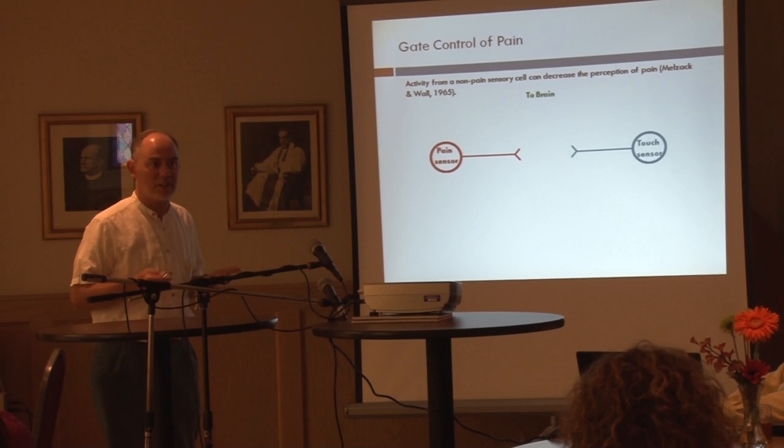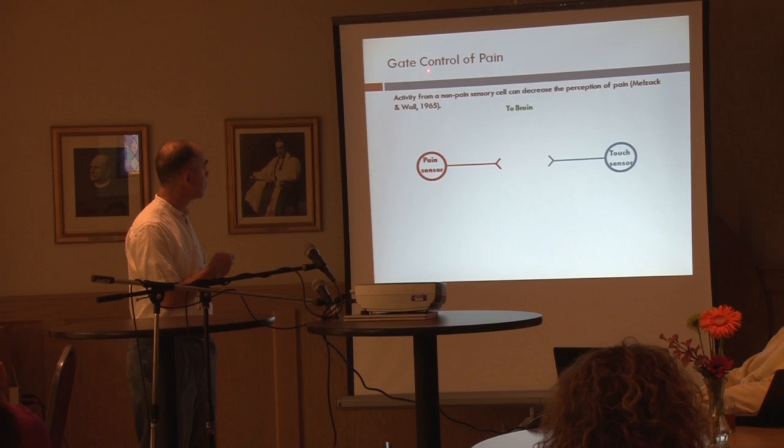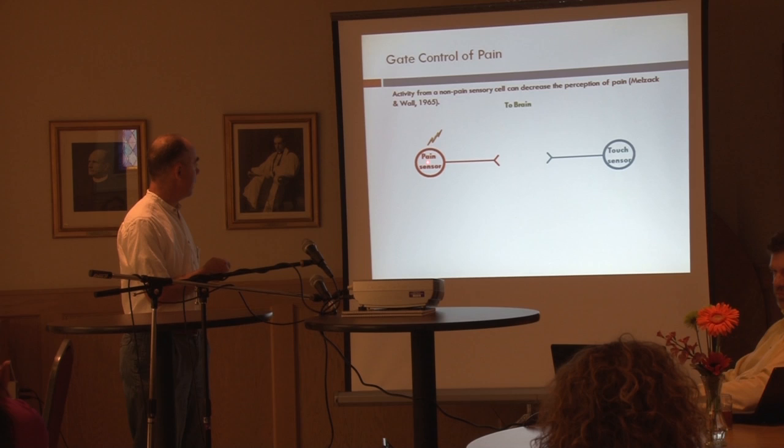From what I've just talked about, it's clear that our brain can modify our perception of pain to make things worse. Can it also modify our perception to make things better? Do we have endogenous analgesic processes within our brain? In fact, we do. One of these processes is referred to as gate control of pain.